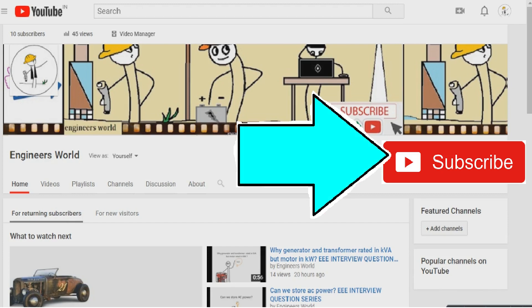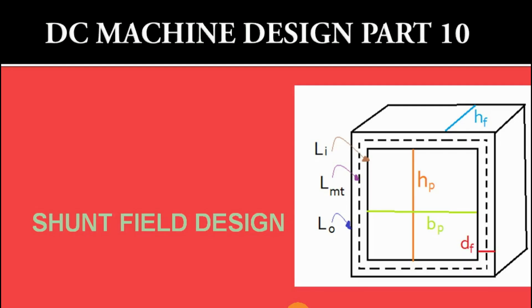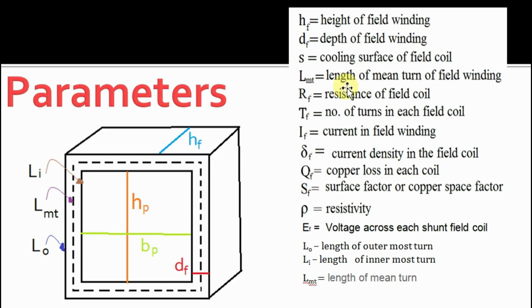For more videos, subscribe to our channel and hit the bell icon. Make sure to tune in to our next video. DC machine design part 10: Shunt field design parameters. hf is the height of field winding.